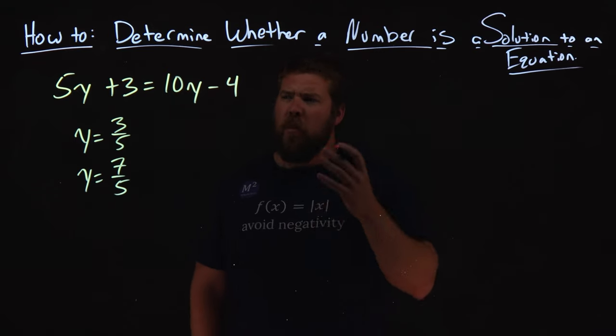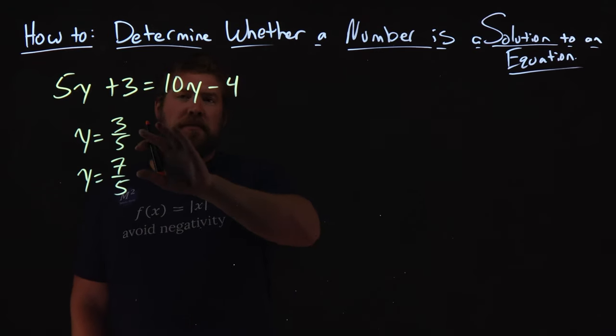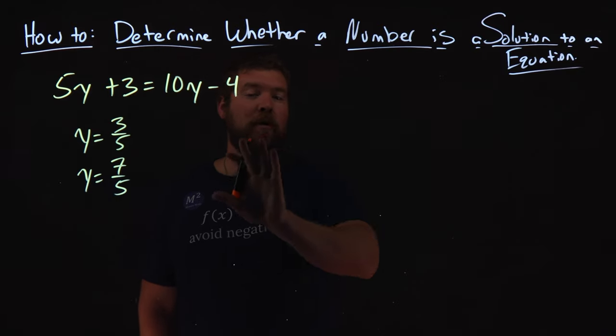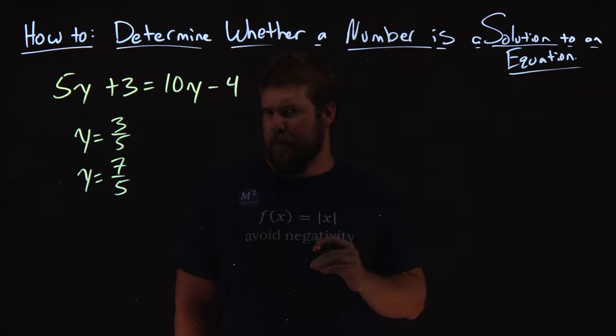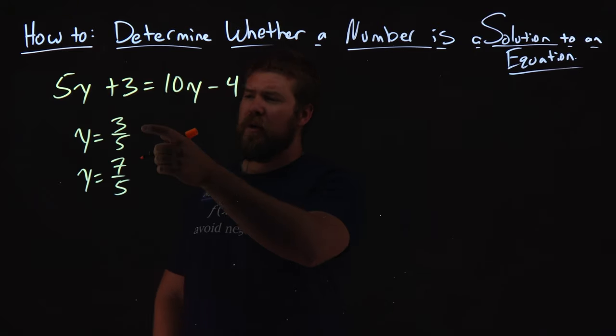How do we do that? What we want to do is take each one of these numbers, substitute them in for y, and see if our equation is still equal, the left and right side. So let's go with 3 fifths first.